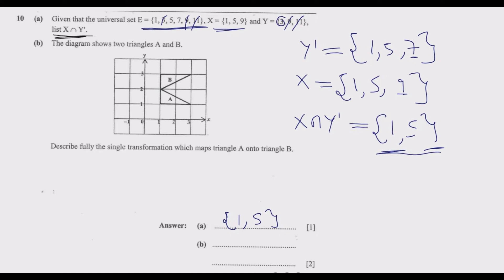Part B: Describe fully the single transformation which maps triangle A onto triangle B. Looking at the diagram, B is in this position and A is in this position. They are sharing the same edge. The distance from here to here and here to here are equal. So basically this is a reflection. That's how you tell whether it's a reflection - the sides are the mirror of each other.